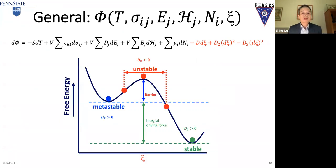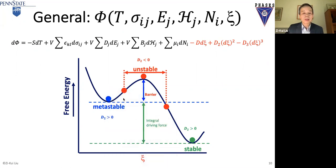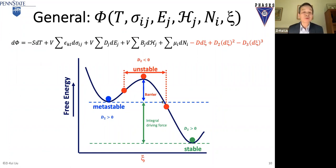If you plot a schematic one-dimensional diagram with one internal variable, the energy as a function of psi allows you to define metastable and stable states — in both cases d²G is larger than zero, defining stability. When d²G becomes zero, you get inflection points inside the range and the system is unstable. When d²G and d³G both equal zero, you reach a critical point.